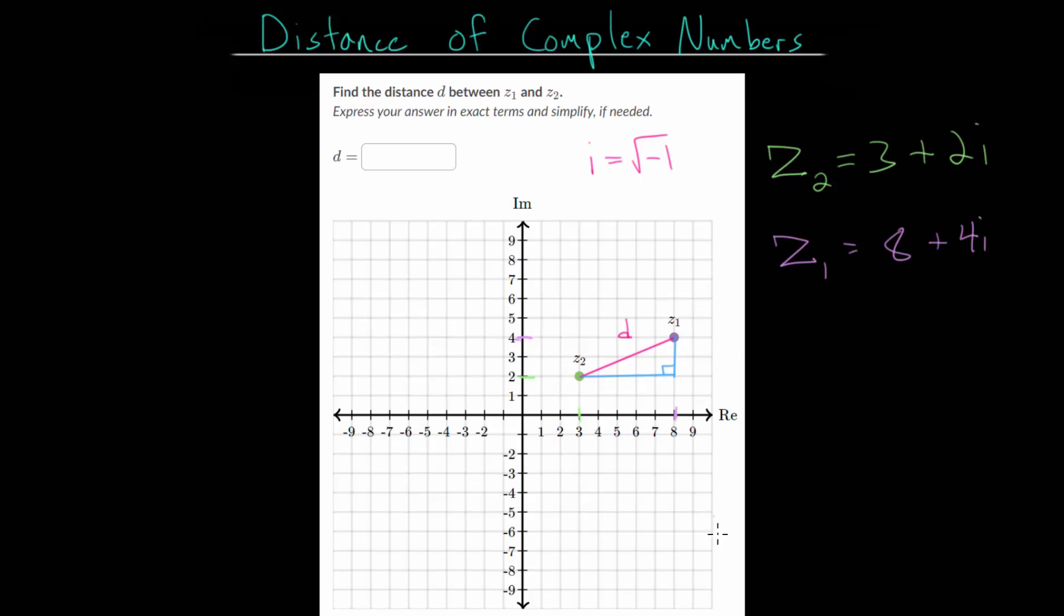Since we have a right triangle, if we know these two side lengths, we can use the Pythagorean theorem to figure out what D is. Or we could use the distance formula between these two points, though the distance formula is really just an application of the Pythagorean theorem. So let's use the Pythagorean theorem. To do that, we just need to figure out what these distances are.